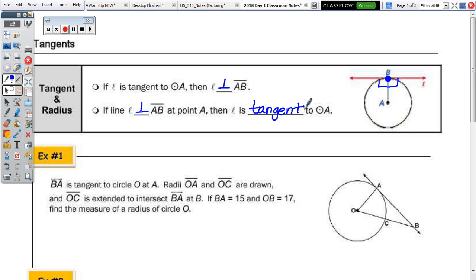So, in example number one, it says that line BA is tangent to circle O at A. Radii OA and OC are drawn, and OC is extended to intersect line BA at B.